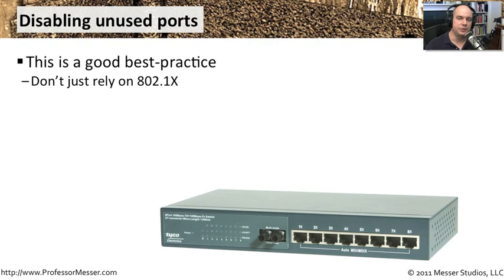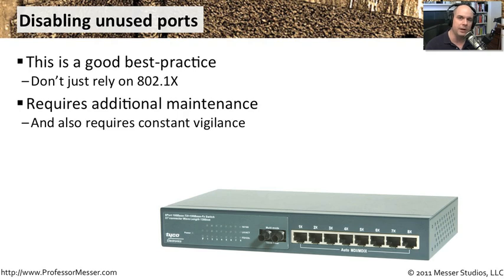Another best practice is to disable any ports that aren't currently in use — ports in cubes where nobody is sitting, or offices where nobody has moved in yet. Make sure those ports are physically turned off. That way, if someone plugged into an empty cube or empty office, they still would not have access to the network. Don't just rely on 802.1x — also put physical limitations in place. This requires additional maintenance and a separate process to ensure you turn on the correct port when needed, and turn it off when someone moves out.